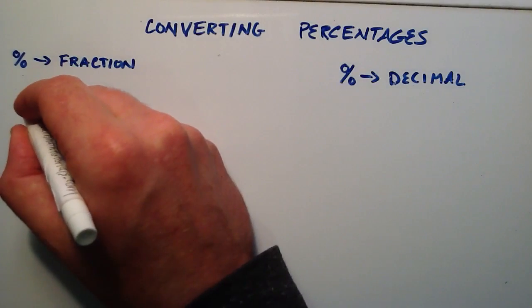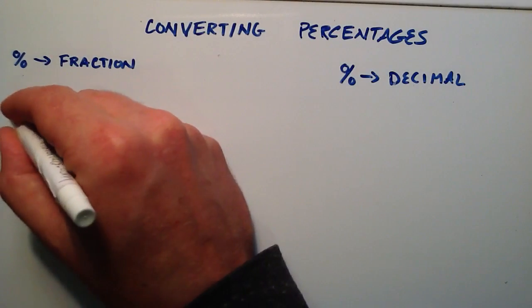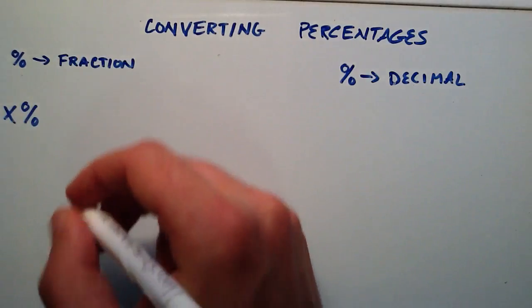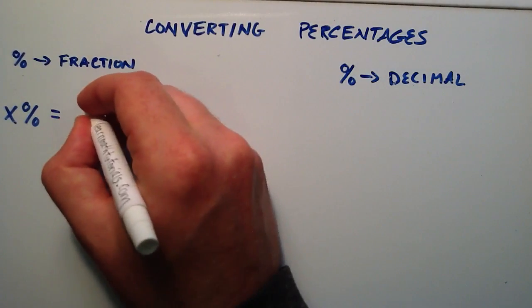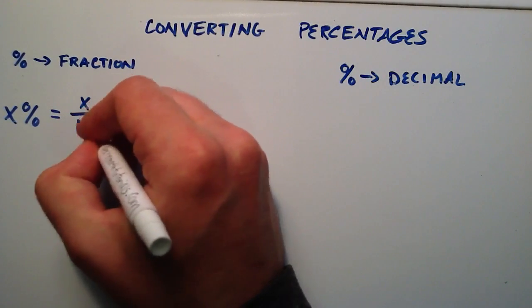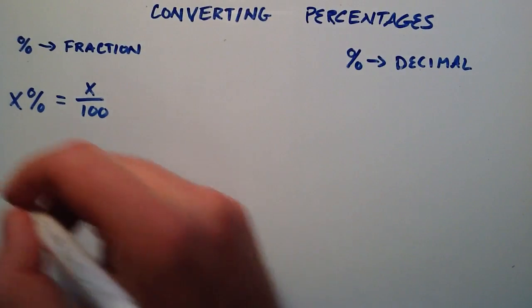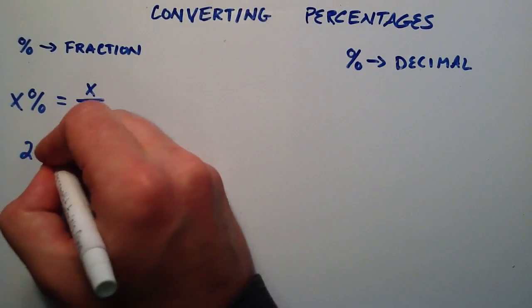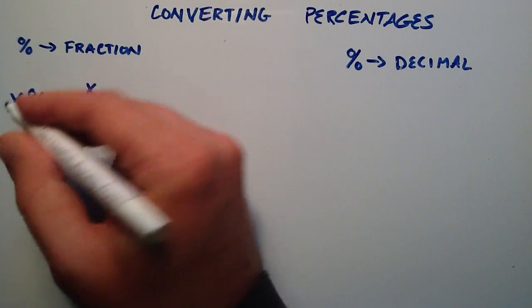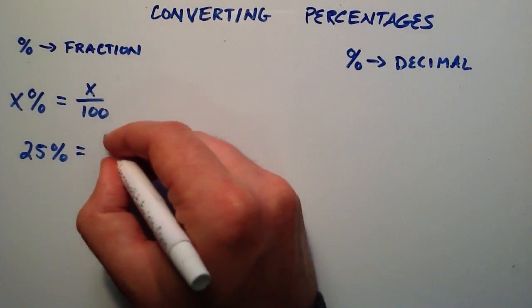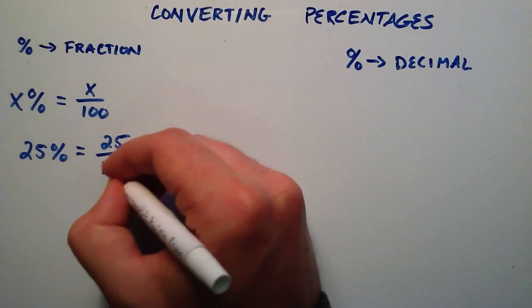So in order to convert a percentage into a fraction, we realize that x percent of something can be rewritten as x divided by 100. So for example, if we're dealing with 25 percent, 25 would be our x, and so we can simply rewrite that as 25 divided by 100.